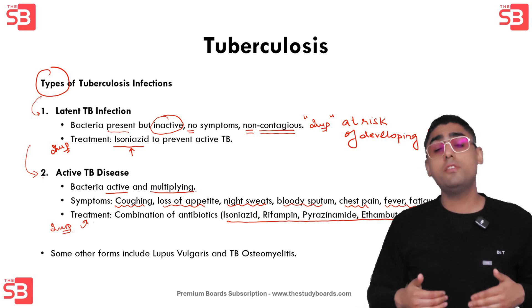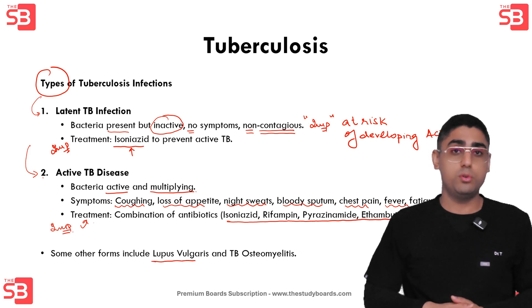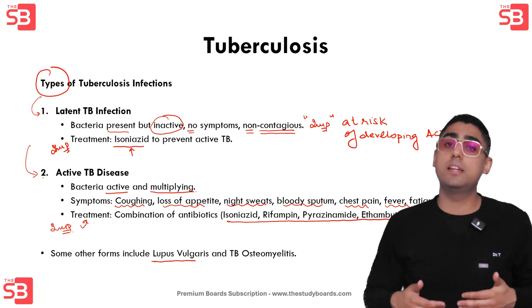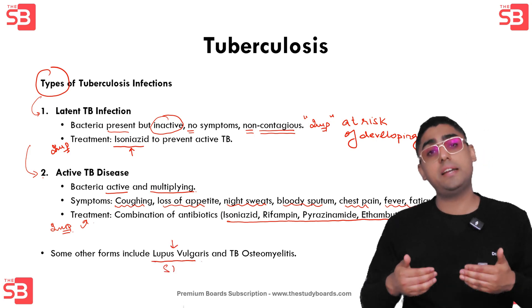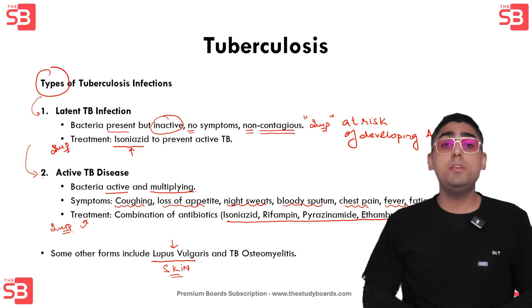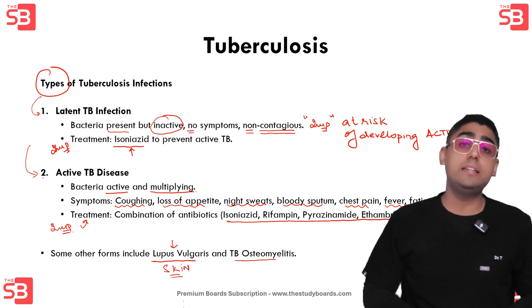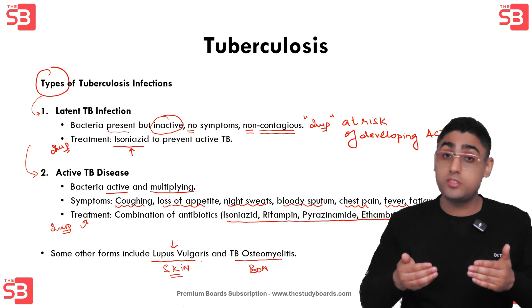There are some other forms of TB as well. Lupus vulgaris is a form of TB affecting the skin. Then there is TB osteomyelitis, where the TB infection involves the bone.